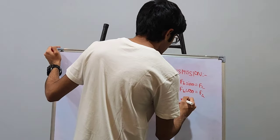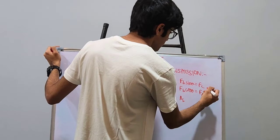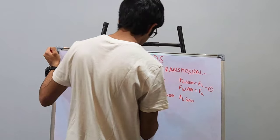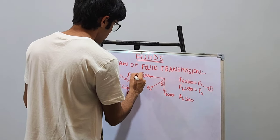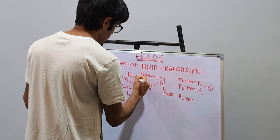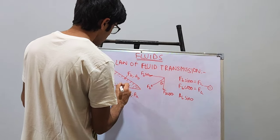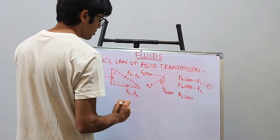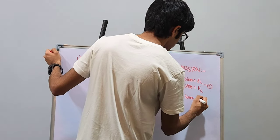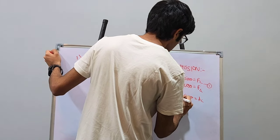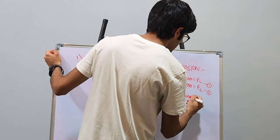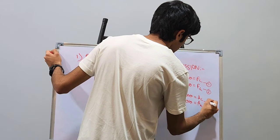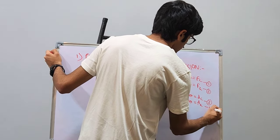So we can also say that from this equation — from the first one — we can say that AB sin theta, where AB is the area of this section, AA is the area of this section and AC is the area of this section. So AB sin theta is equal to AC, and from the second equation we can say that AB cos theta is equal to AA. This is the third and this is the fourth equation.